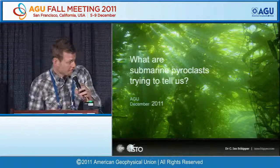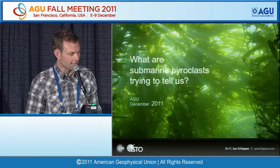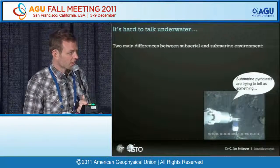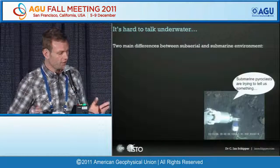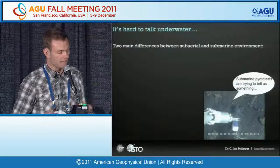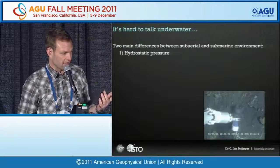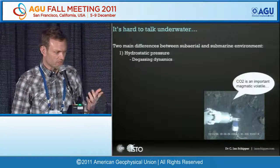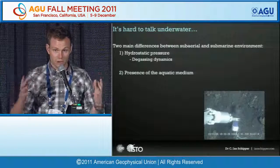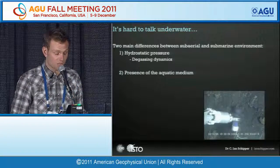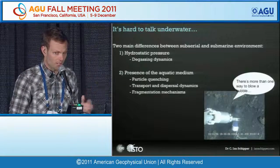Thank you very much. The topic of today's presentation is what are Submarine Pyroclasts trying to tell us, because it's hard to talk underwater. If we have a column of water over top of our volcanic vent, that will affect the eruption in several ways. We can divide the effects into two general types: first, elevated hydrostatic pressure influencing degassing dynamics; and second, the presence of water affecting particle quenching, transport and dispersal dynamics, and fragmentation mechanisms.